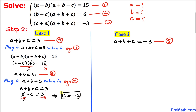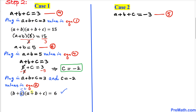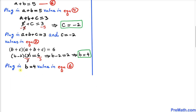Next, we plug c = -2 and a+b+c = 3 into equation 2: (b + (-2))(3) = 6. Dividing both sides by 3, we get b - 2 = 2, so b = 4.